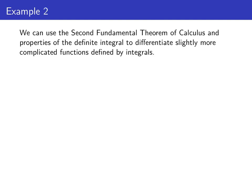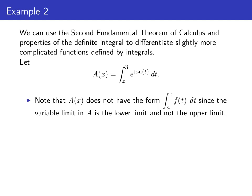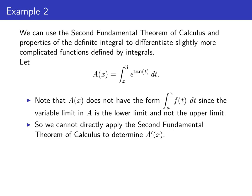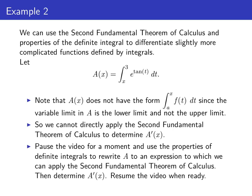We can use the second fundamental theorem of calculus and some properties of the definite integral to differentiate slightly more complicated functions. For example, let A of x be the definite integral from x to 3 of e to the tangent of t dt. Note that this function, capital A, doesn't have the form integral a to x of f of t dt that's in the second fundamental theorem of calculus, since the variable limit in A is the lower limit and not the upper limit. So we can't directly apply the second fundamental theorem of calculus to find A prime. Pause the video and see if you can figure out how to rewrite A and then calculate the derivative of A.